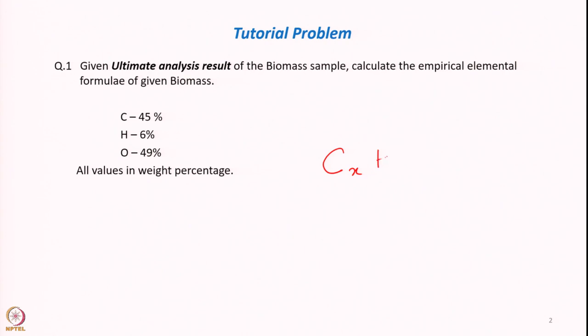Our task is to calculate the empirical elemental formula, which looks like C_X H_Y O_Z — similar to a typical oxygenated hydrocarbon formula. But here we are looking at a heterogeneous compound like biomass or coal, which does not have any single chemical species but is a mixture of hundreds or even thousands of different chemical species.